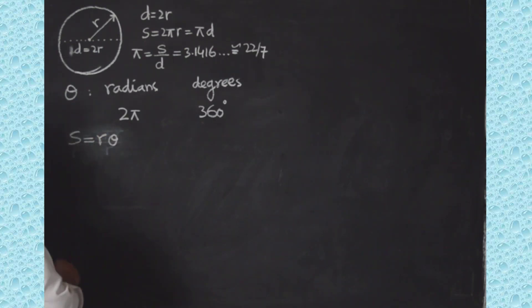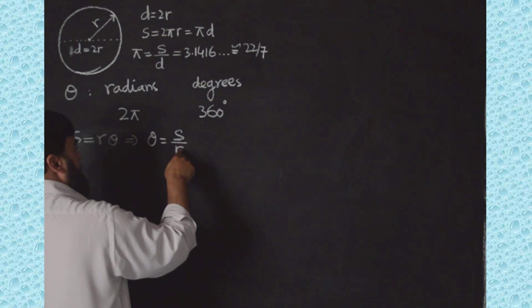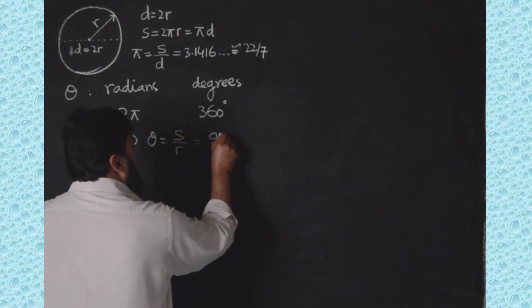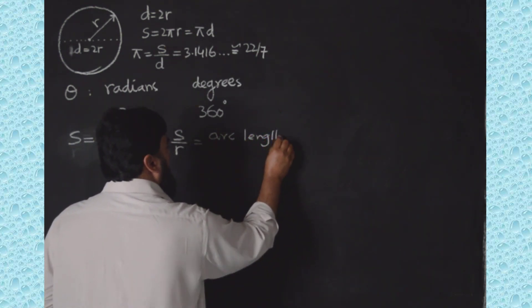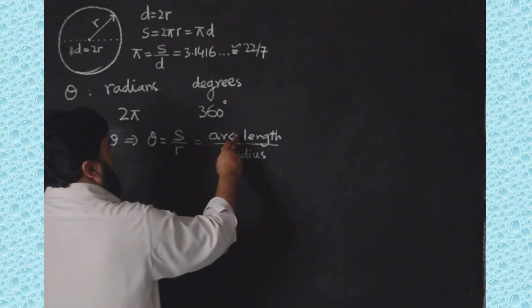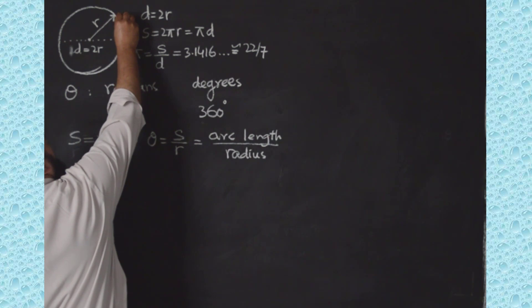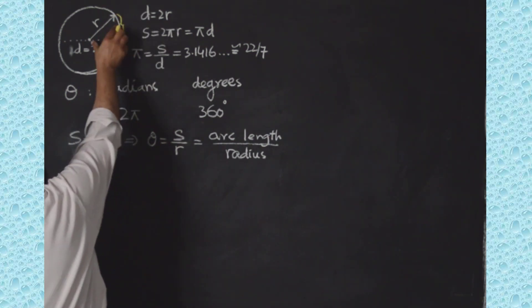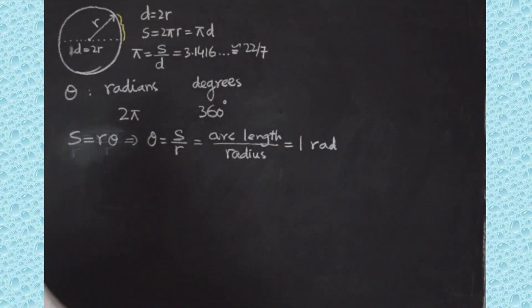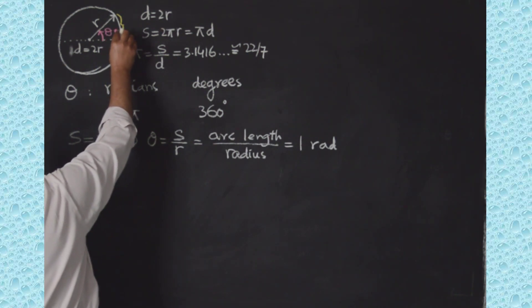From that, one radian will be equal to 360 divided by 2π. As I have written earlier, s is equal to r times theta, so this implies that theta is equal to s over r. The arc length divided by r is theta. So when the arc length s divided by the radius is exactly equal to 1 — meaning the arc length is equal to the radius — then the angle will be equal to one radian.